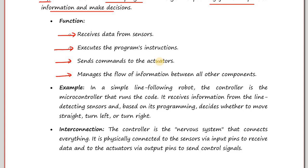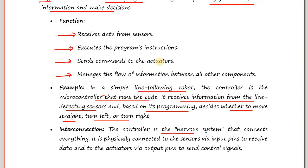For example, in a simple line-following robot, the controller is a microcontroller that runs the code. It receives information from the line-detecting sensor and, based on its programming, decides whether to move straight, turn left, or turn right. The interconnection is that the controller acts as the nervous system connecting everything — physically connected to the sensors via input pins to receive data, and to the actuators via output pins to send control signals.